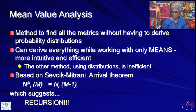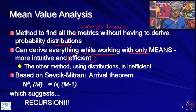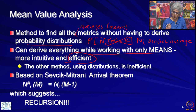Mean value analysis is a method to find all the metrics without having to derive the probability distribution. When I say all the metrics, we only find averages or means — that is the whole point. We can work only with the means, which makes the entire algorithm intuitive and more importantly efficient. We never have to derive the probability that the number of customers at node i when the load level is M — n_i(M) just denotes the average, not a random variable — so we do not go through probability distributions at all.